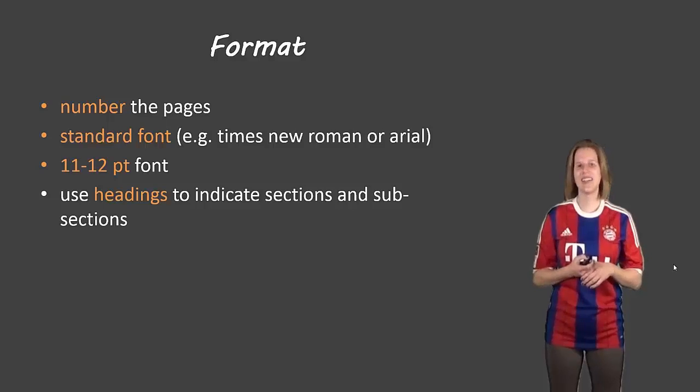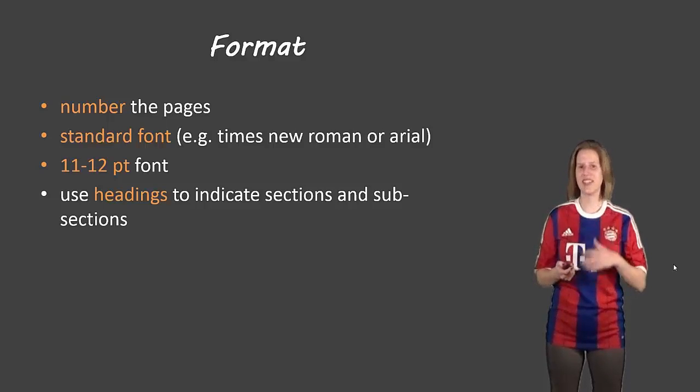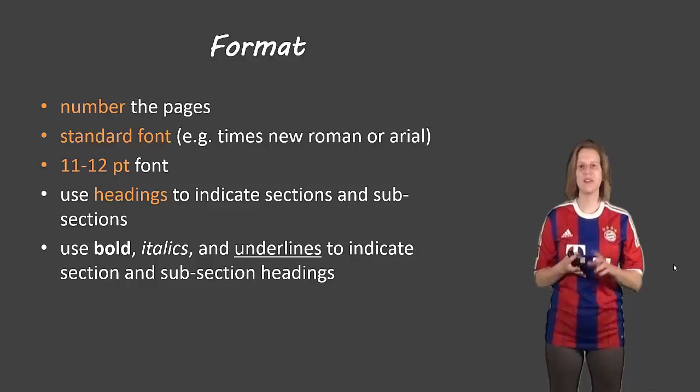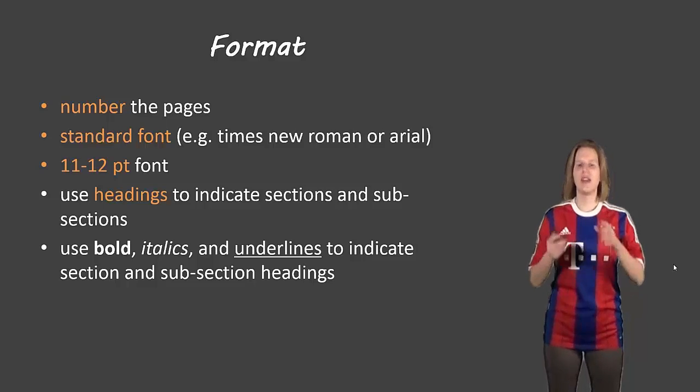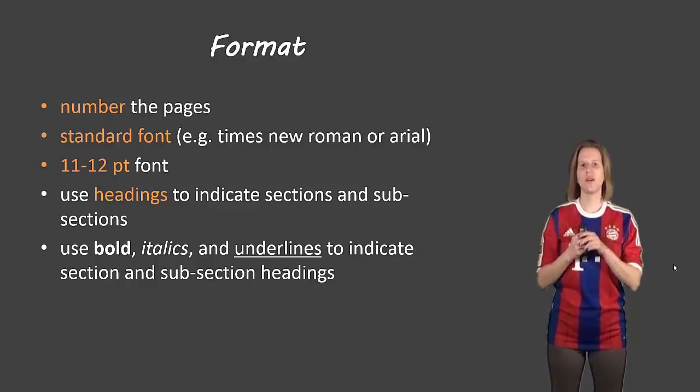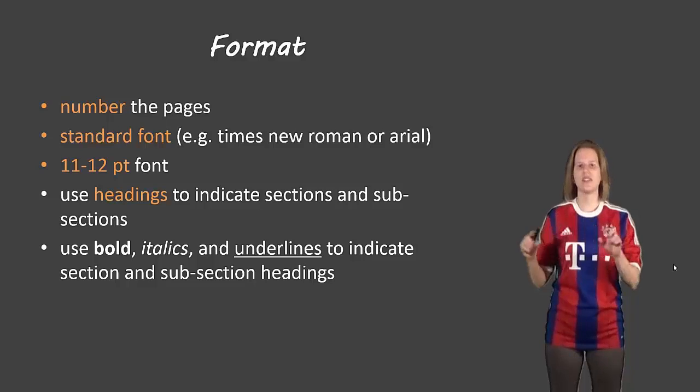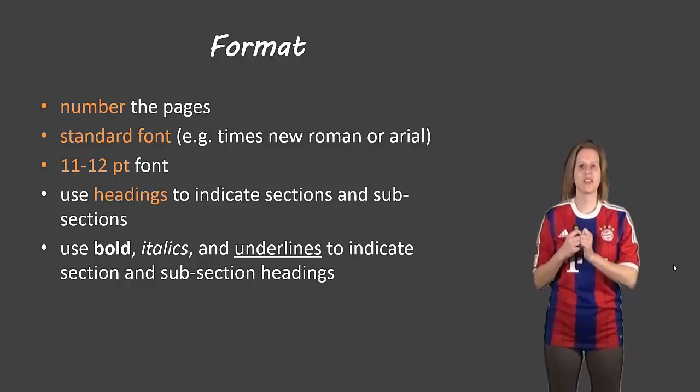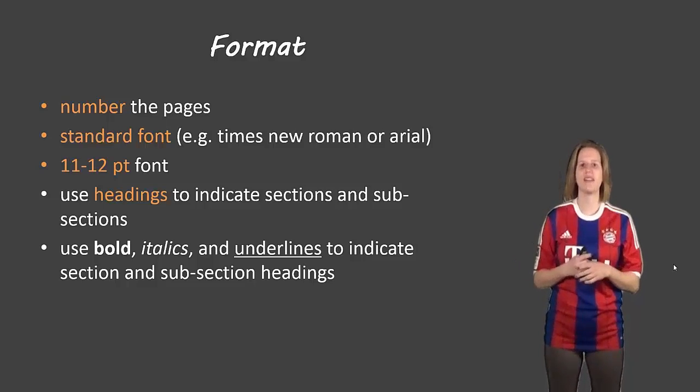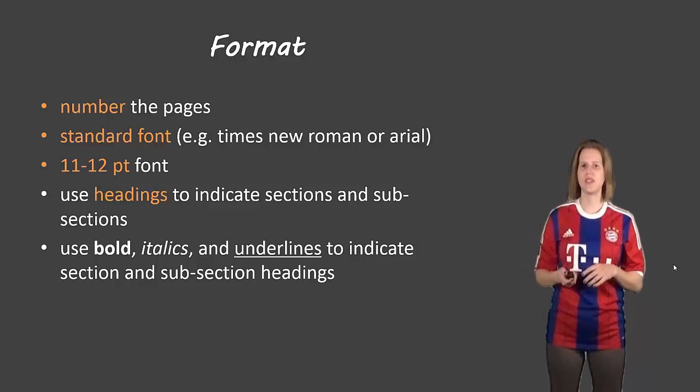Use headings to indicate sections and subsections. And you can do this using bold, italics, underline, whichever one you prefer. So for example, in a discussion section, you would have a major heading that says discussion. And then underneath it, let's say your discussion includes a general discussion about the lab. And then there's a discussion, maybe it's an inquiry lab. So you're talking about sources of error and strengths and limitations. And then maybe there are some discussion questions. So again, you'd have a heading for that. So you'd split it up into these subsections.